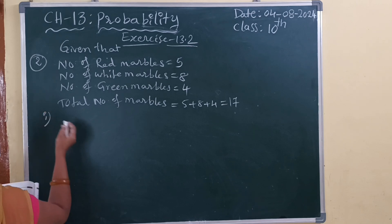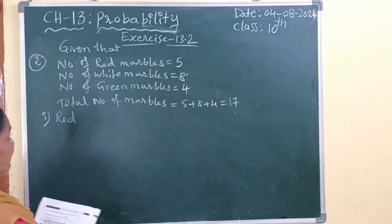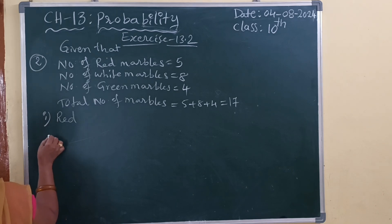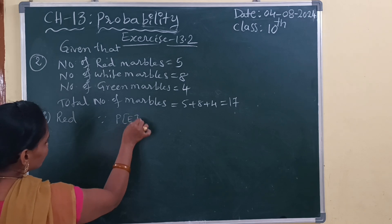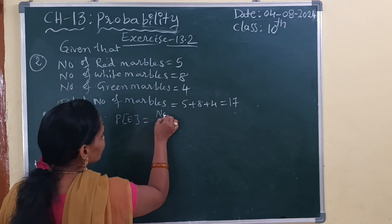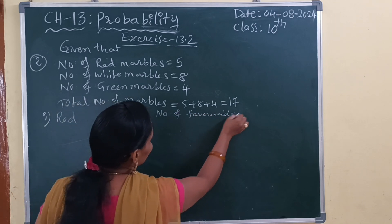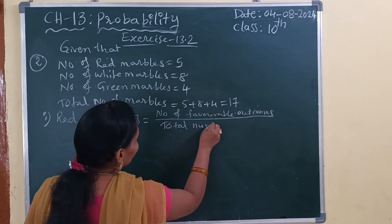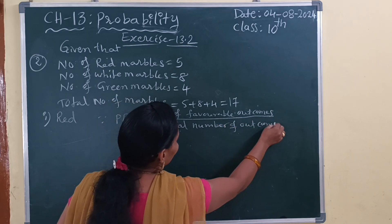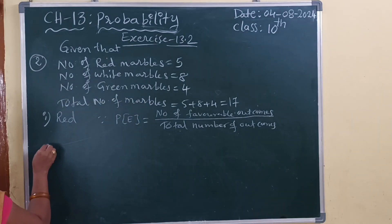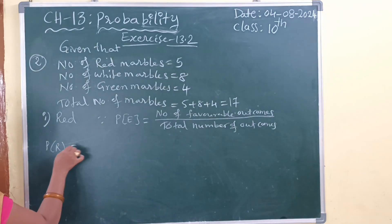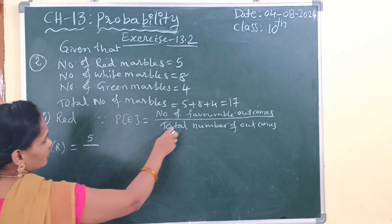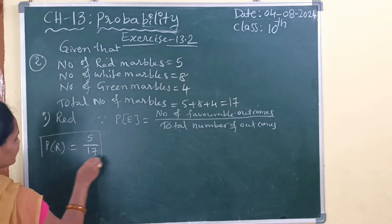First bit — what we need to find out is the probability of getting a red marble. Probability of event is equal to number of favorable outcomes divided by total number of outcomes. P of R: number of favorable outcomes — red marbles — is 5, divided by total number of outcomes: 17. So, probability of getting a red marble is 5 by 17.